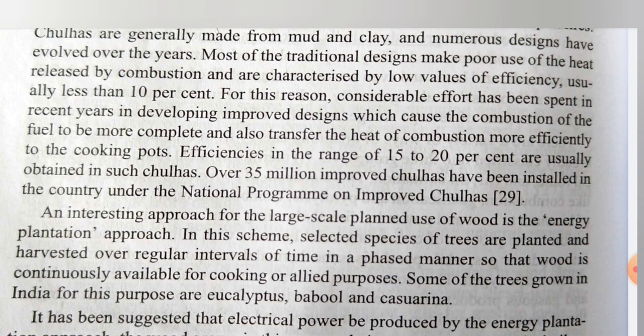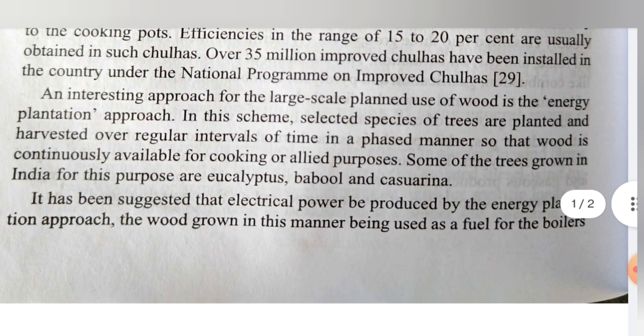Only 15 to 20% of the heat is utilized in the burning of wood in the chulas, meaning very poor efficiency and large heat losses. Over 35 million improved chulas have been installed in the country under the national program on improved chulas. An interesting approach for large-scale use of wood is the energy plantation approach, where selected species of trees are planted and harvested over regular intervals in a phased manner so that wood is continuously available. Some of the trees grown in India for this purpose are eucalyptus, babul, and casuarina.